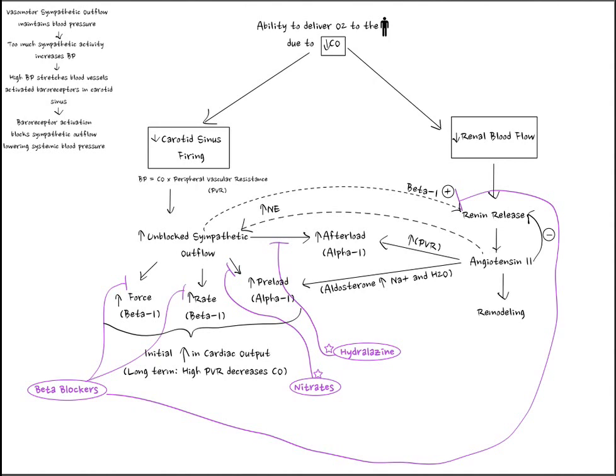Diuretics act by increasing the secretion of sodium and water into the urine, thereby decreasing blood volume and decreasing preload. We usually use loop diuretics since they're the most efficient. Spironolactone is also a diuretic used in heart failure, but it's used less for its diuretic effects and more for its effects on aldosterone. Aldosterone normally precipitates remodeling of the heart, so spironolactone blocks its effects, thereby blocking remodeling.